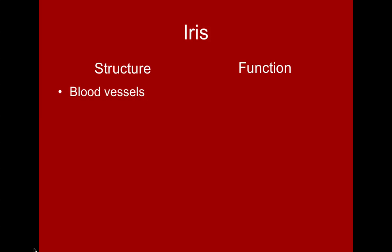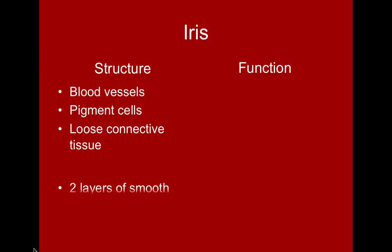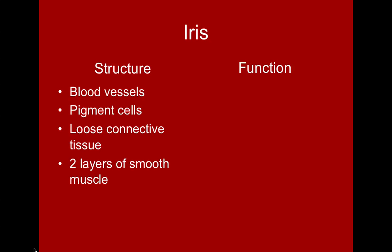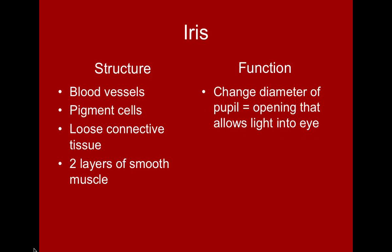The iris is composed of blood vessels, pigment cells, loose connective tissue, and two layers of smooth muscle. It functions to change the diameter of the pupil, which is the opening in the iris that allows light into the eye.